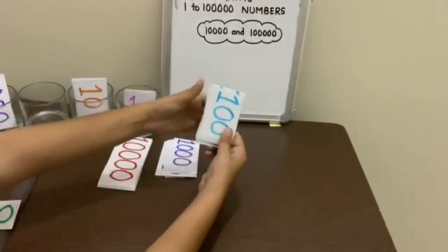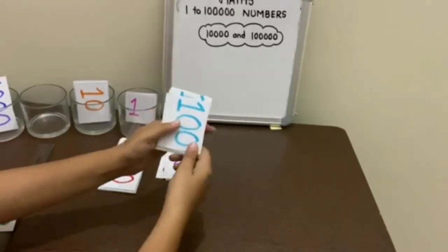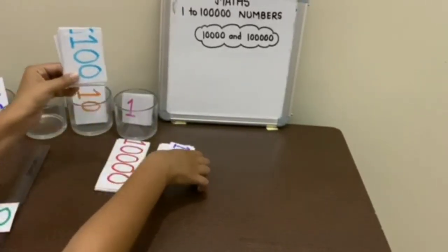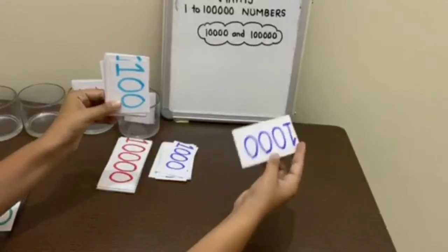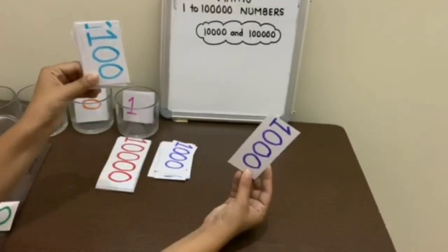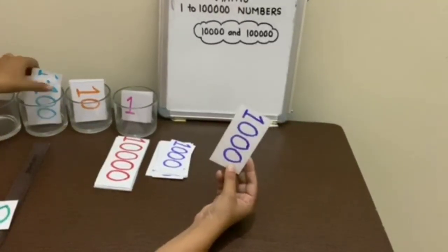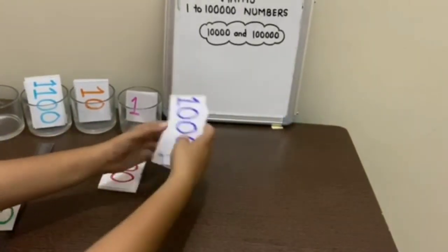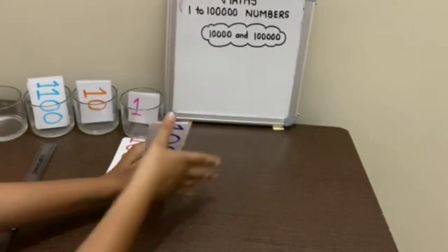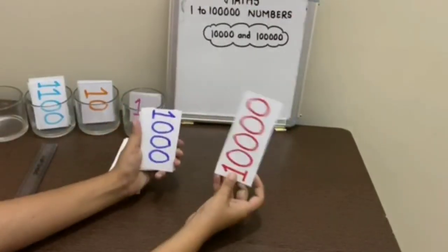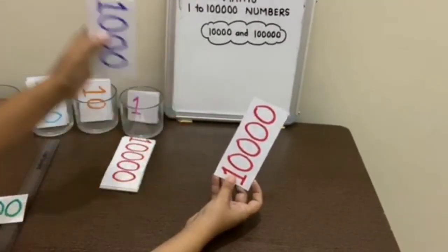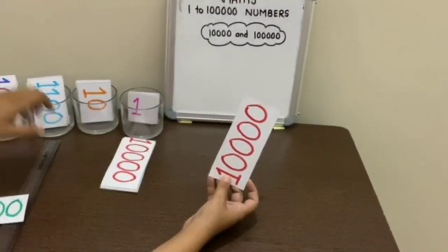Next, this becomes 10 hundreds, which equals 1,000, so we will take a 1,000 flashcard. If we add this, it becomes 10 thousands, which equals 10,000, so we replace this with a 10,000 flashcard.